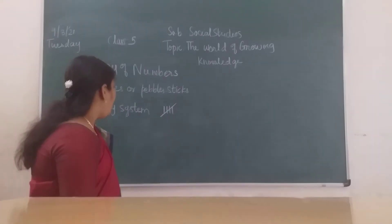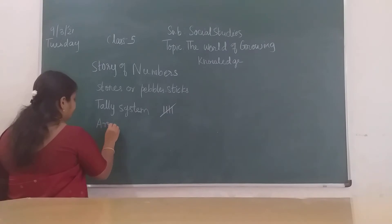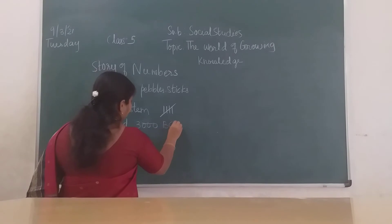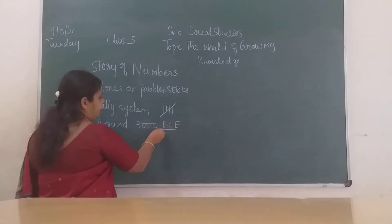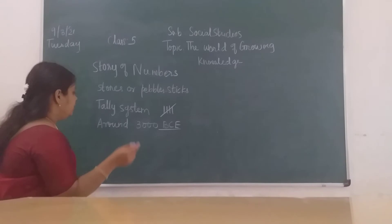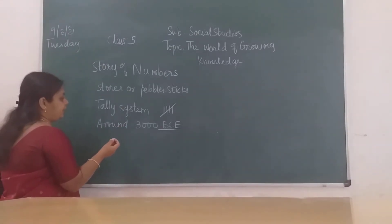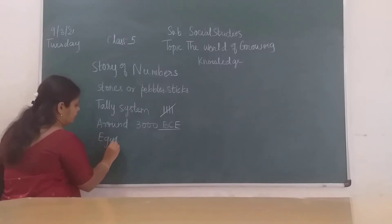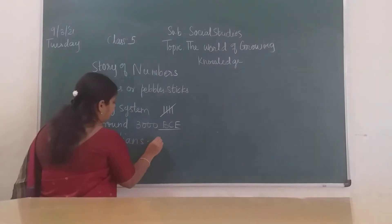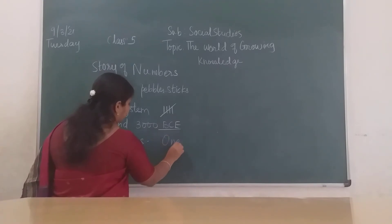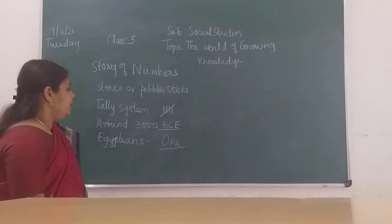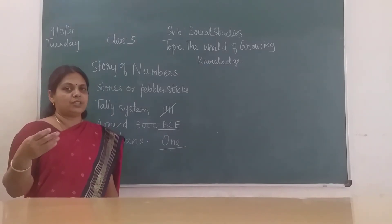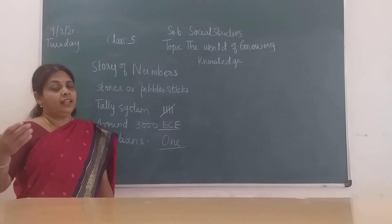Around 3000 BCE — BCE means Before Christian Era — the Egyptians discovered the number 1. This led to many inventions, as they started developing the remaining numbers 2, 3, 4, 5, 6, 7, 8, 9, up to 9.